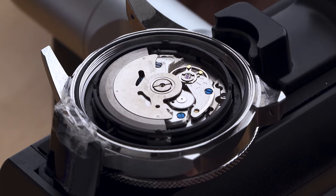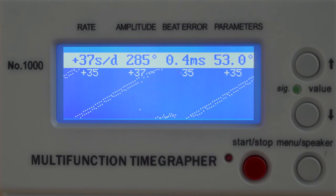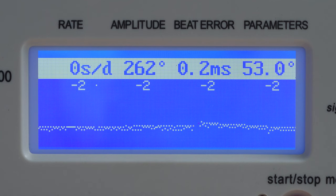On the time grapher, you can already see the rate changing. You can also look at the slope of the line for more immediate feedback. Remember, we want to shoot for a flat line, or a line with a very slight upward slope.